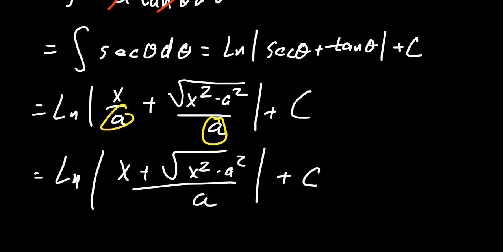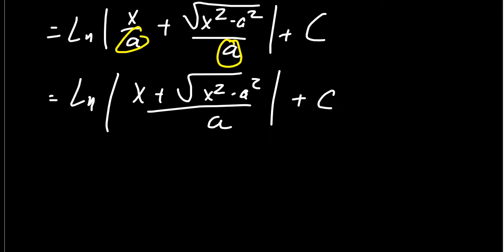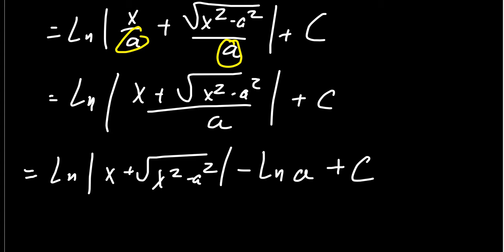Now, this is sitting inside of a natural log and a fraction inside of a natural log can be turned into a difference of logarithms. So we end up with the natural log of the absolute value of x plus our square root of x squared minus a squared. We then get minus the natural log of the absolute value of a, which admittedly as a is assumed to be positive, the absolute value is redundant here. And then we get plus c.